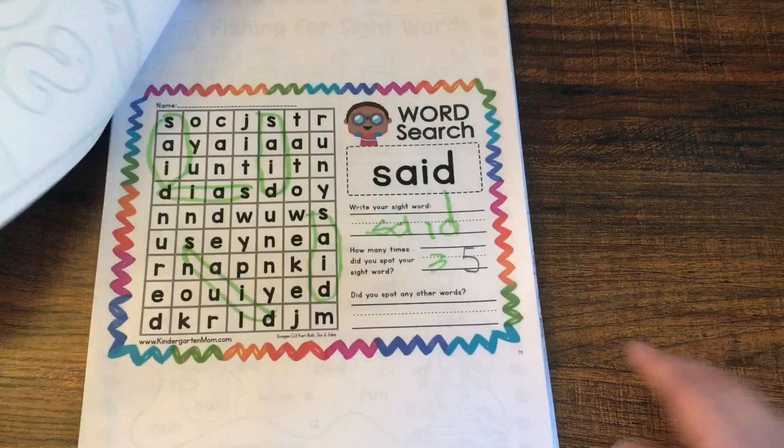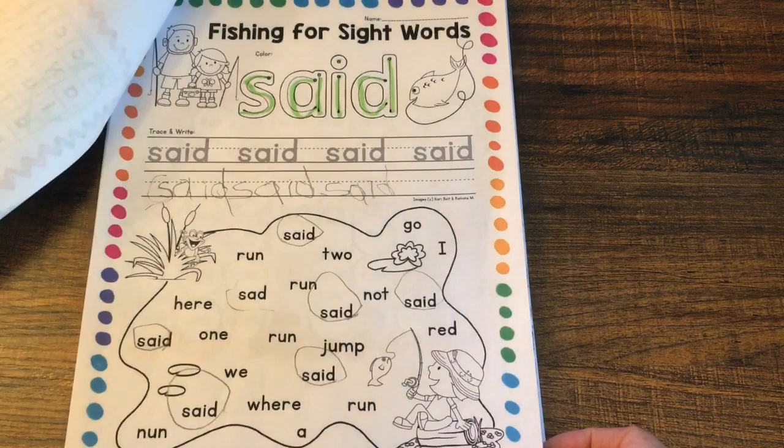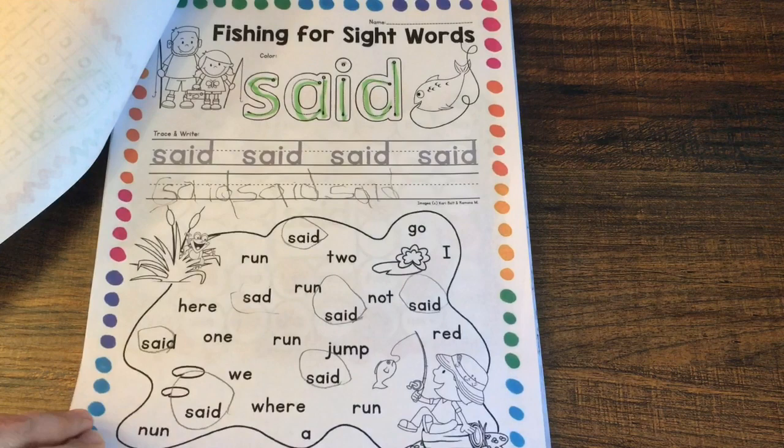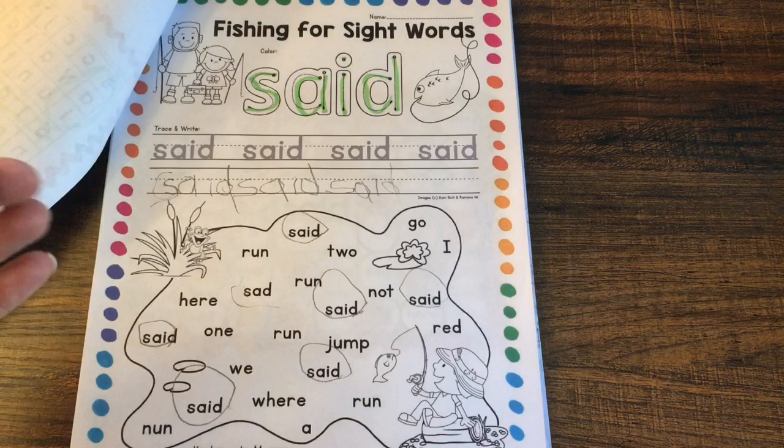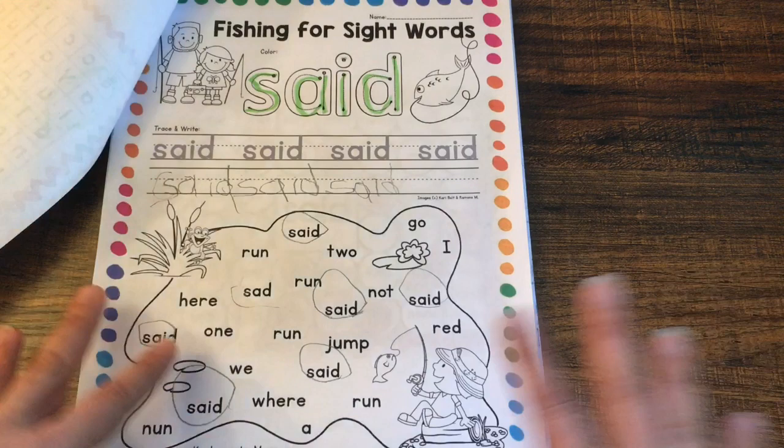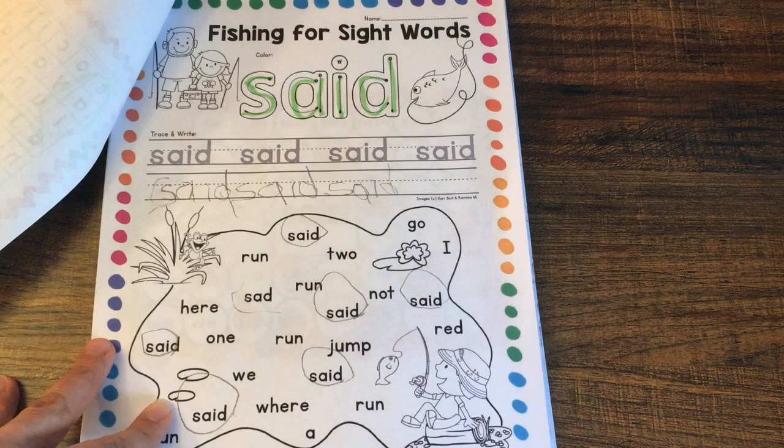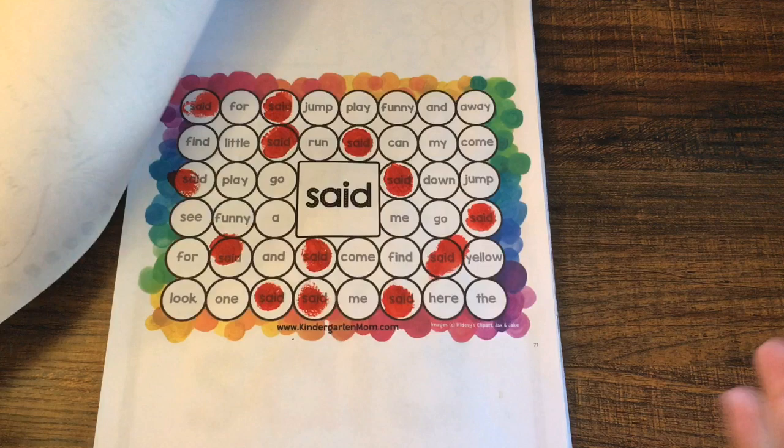On this page, we did a word search. We practiced writing the word, tracing, writing. Then we fish for the word here. These are really good. I love how simple the activities are and how much the word is presented to them so many times that at the end, after we're done with a word and we're reading a story, we saw a word somewhere. He will point out the word. 'Oh, mommy, look. That's one of our words for the week.' So this is great how much exposure they have for that word.